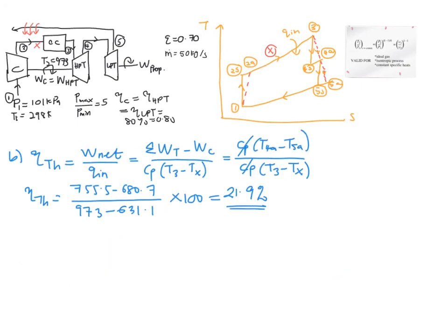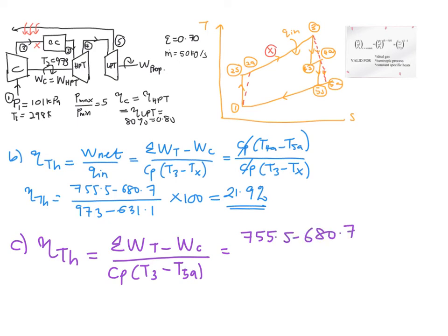So what happened to your thermal cycle efficiency? It is equal to your summation of your work turbine minus your work compressor, and now your temperature X is T5a. So it is equal to T4a minus T5a over 973 minus 680.7, times 100%. Finally, you will get your thermal cycle efficiency equal to 25.5%.